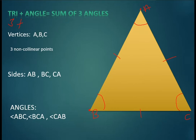So a triangle has three vertices, three sides, and three angles. This means we can say a triangle has six elements in total.